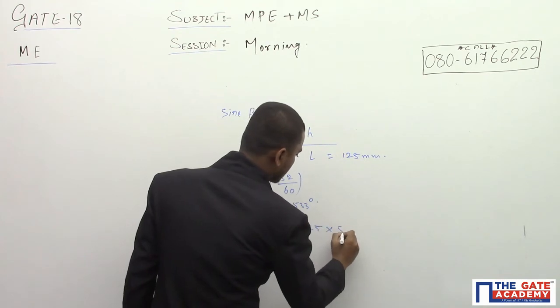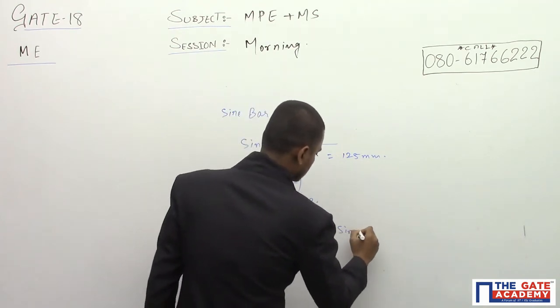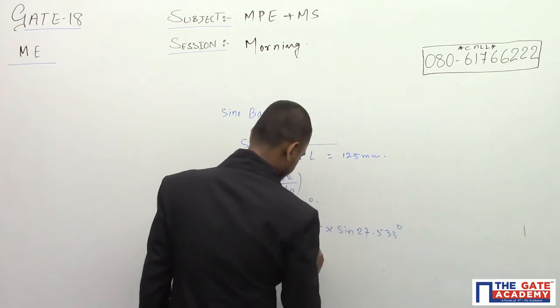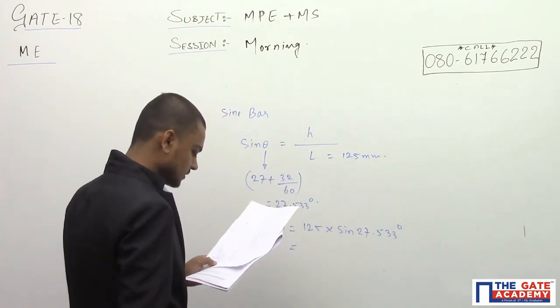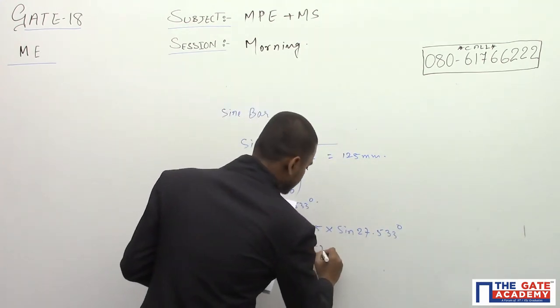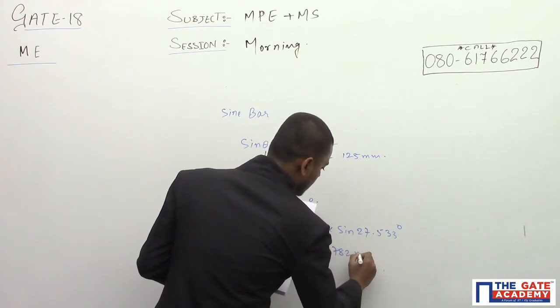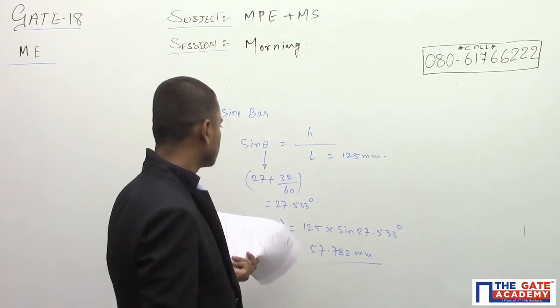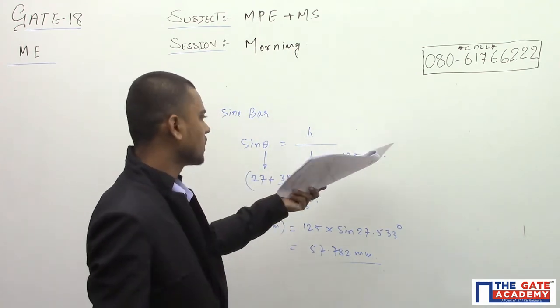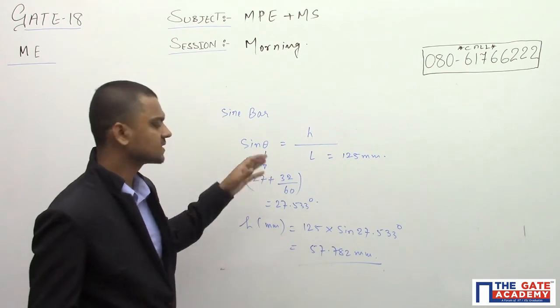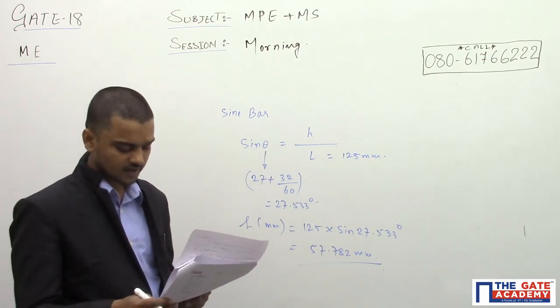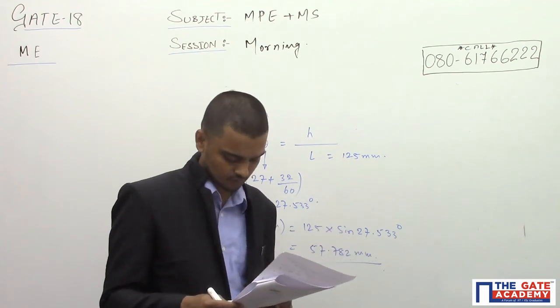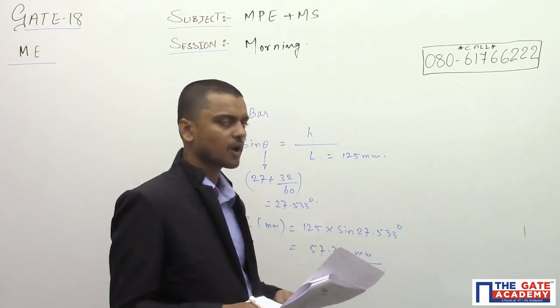You will get 57.782 mm. This is the height for a sine bar of length 125 mm to measure the taper of 27 degree 32 minutes. So you will get 57.782.